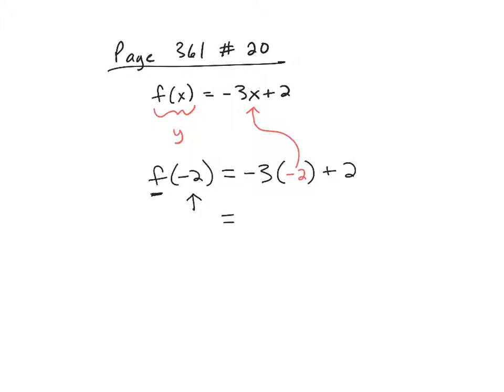When I multiply -3 times -2, I get a positive 6. Then I have to add my 2, so my final answer is f(-2) = 8.